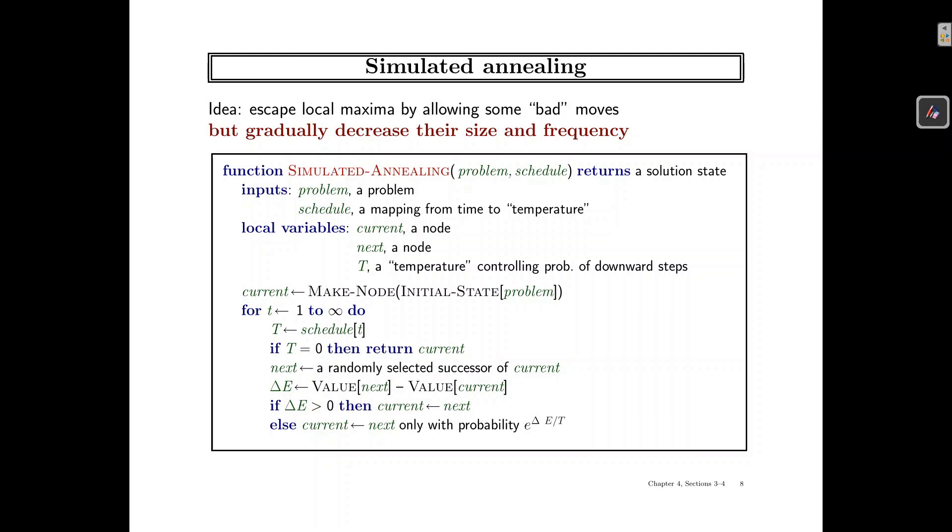On the other hand, we have the other extreme, which is a purely random walk. So we simply move to a successor which is chosen uniformly at random. So what if we want to find an approach which is between hill climbing and random walk, so somehow it is efficient as well as complete? That algorithm would be simulated annealing.